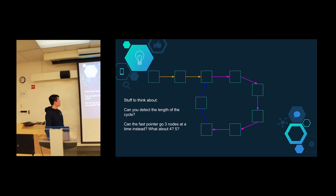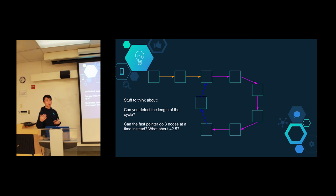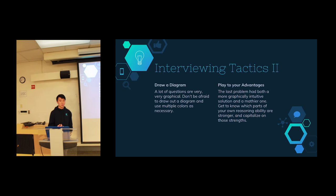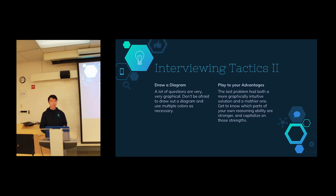Some follow-up questions to think about: Can you detect the length of the cycle? What if the fast pointer moves three, four, or five nodes at a time? Does the slow pointer just need to be slower than the fast pointer? Key interviewing tactics: draw a diagram — you'd have much less success without drawing nodes on paper. Also, play to your advantages: some people think graphically, others think algebraically. Practice more problems to develop your personally effective approach.